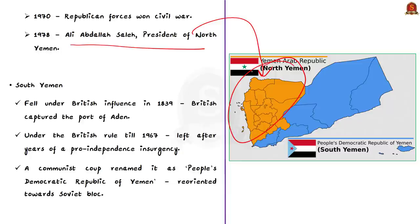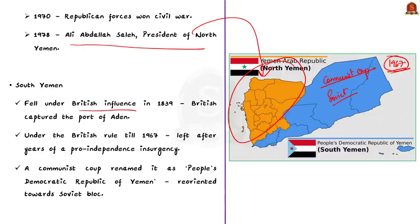Coming to South Yemen, it was under British influence until 1967. After a very long pro-independence insurgency, the British left South Yemen in 1967. Immediately, a communist coup renamed it the People's Democratic Republic of Yemen and reoriented it towards the Soviet bloc. So while the Northern bloc was under control of President Ali Abdullah Saleh, the Southern bloc was oriented towards the Soviet bloc.